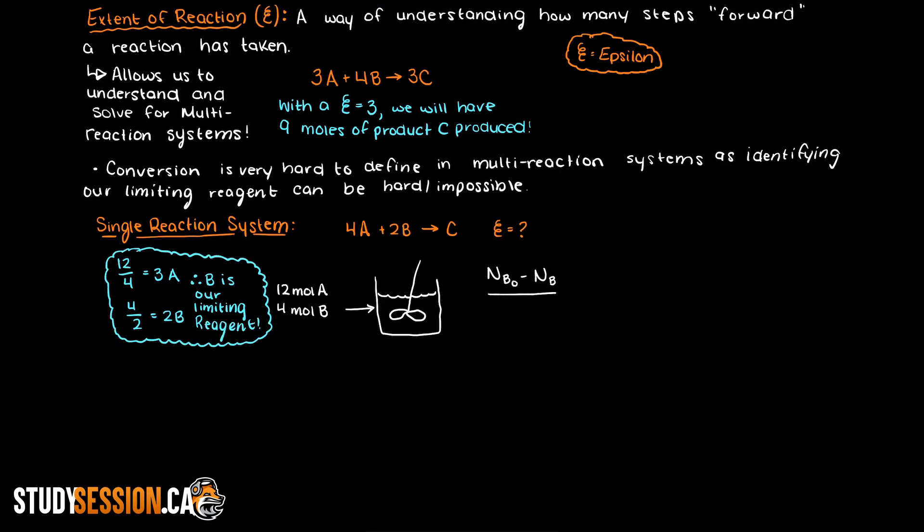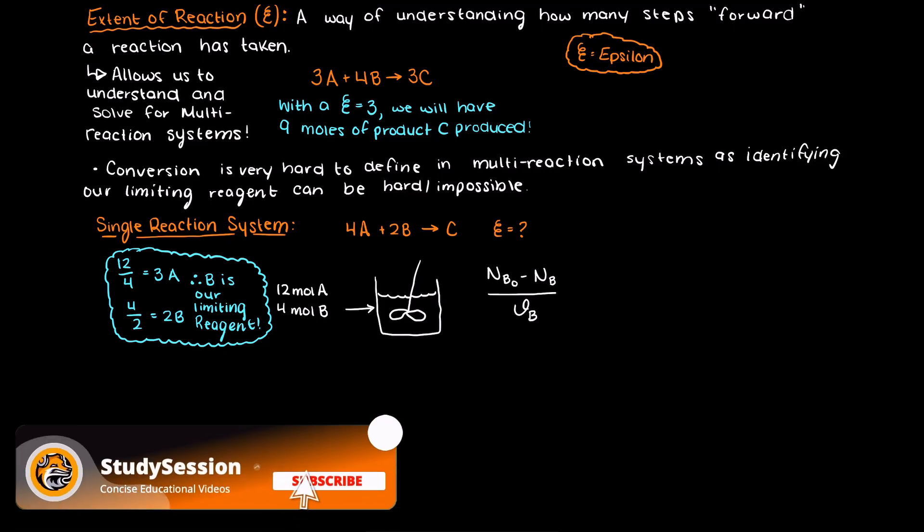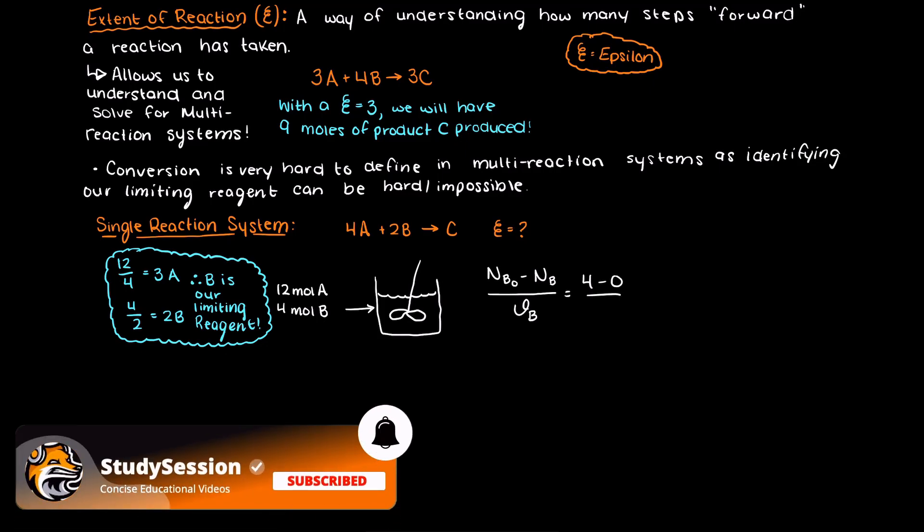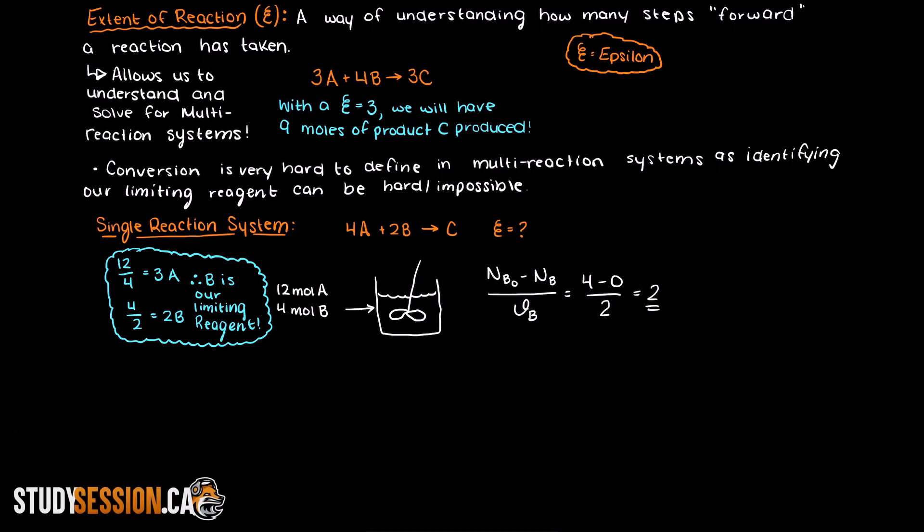To find the extent of this single reaction system, we take our number of B moles at the beginning and subtract from the number of B moles we have at the end. Then divide this all by the stoichiometric coefficient of B that we needed to create the reaction. Therefore we have 4 minus 0 divided by 2 which gives us an extent of reaction of 2.